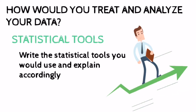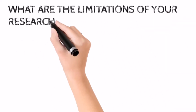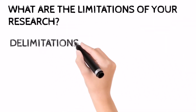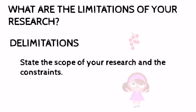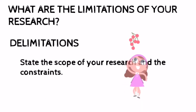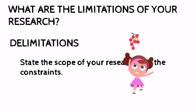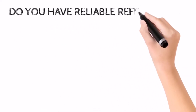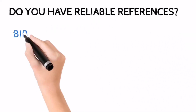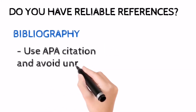What are the limitations of your research? The delimitations should be able to answer this question. You should state the scope of your research and the constraints, and you should be able to decide the scope of your research. The last question is: do you have reliable references? The bibliography should be able to answer this question, and you should use APA citation and avoid citing unreliable sites.